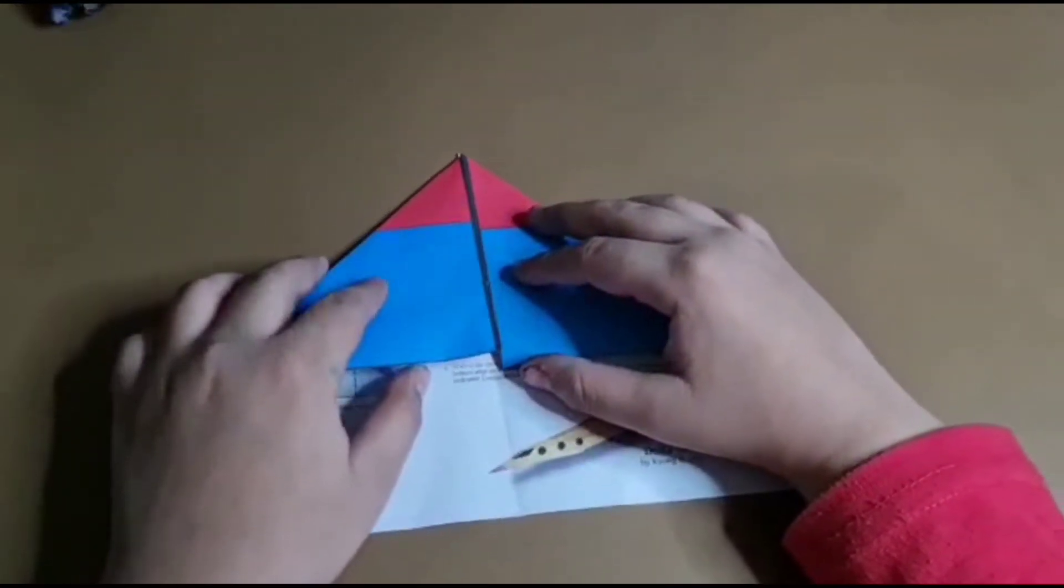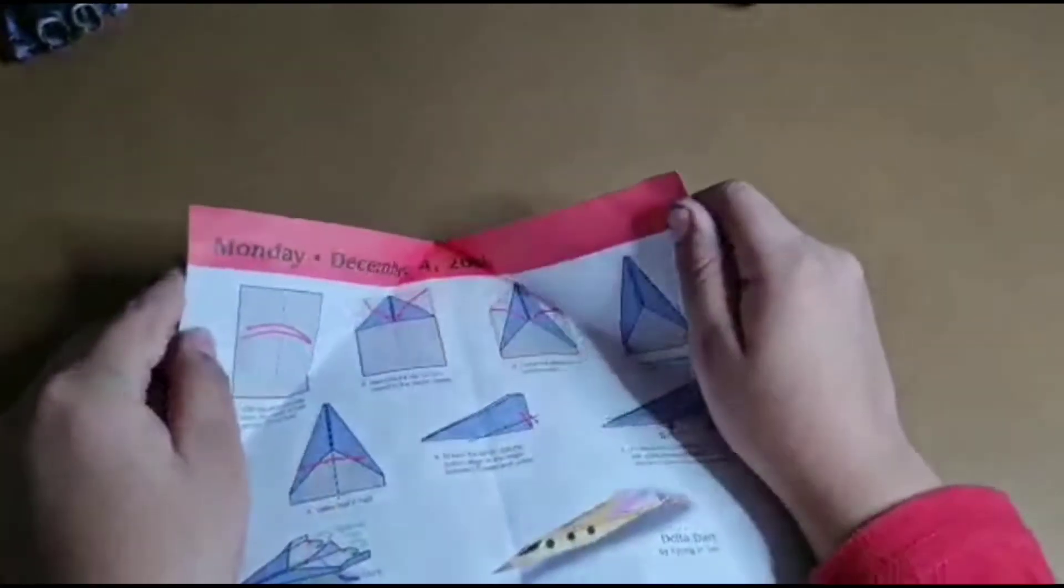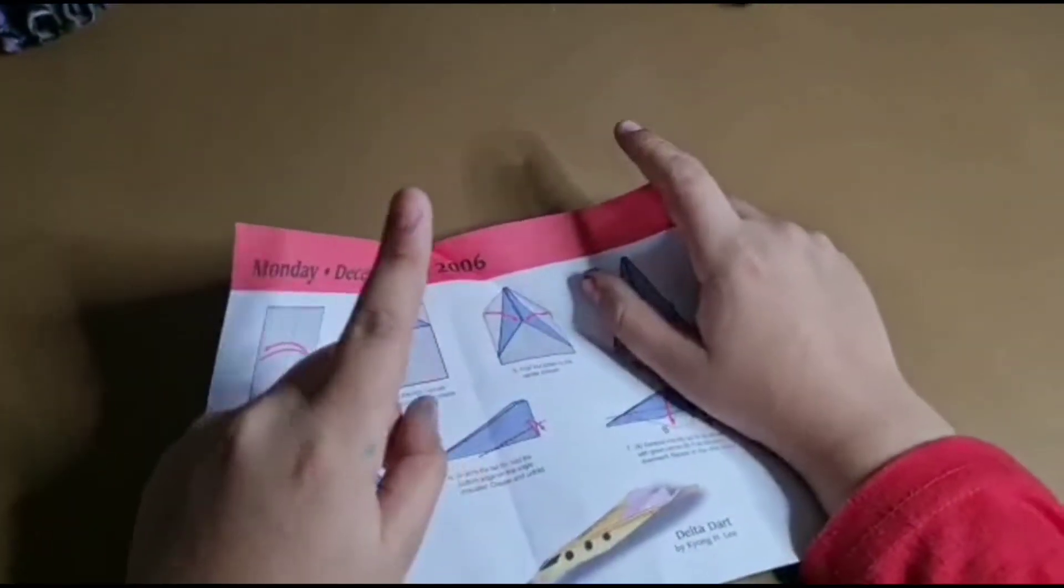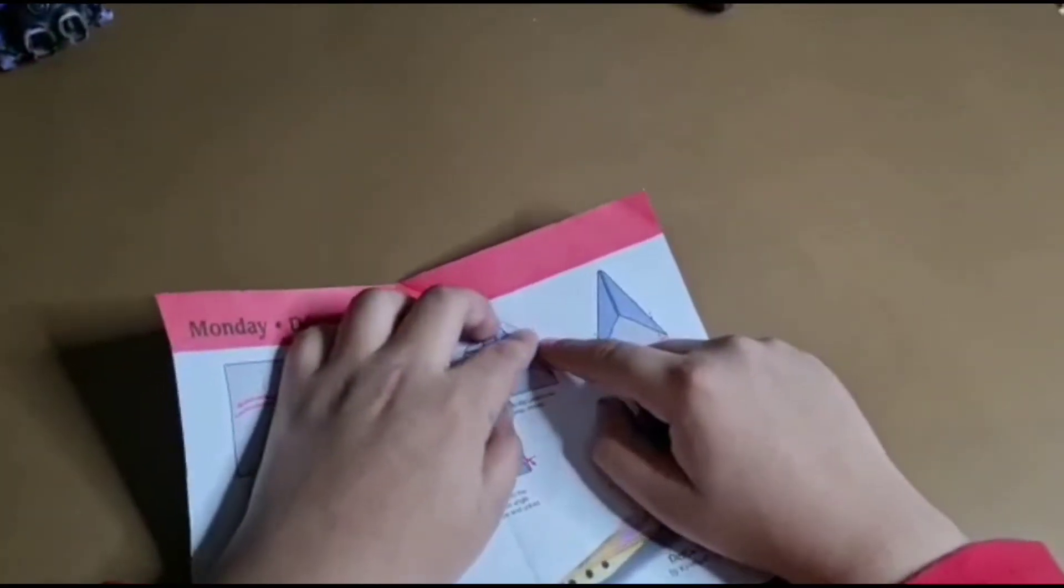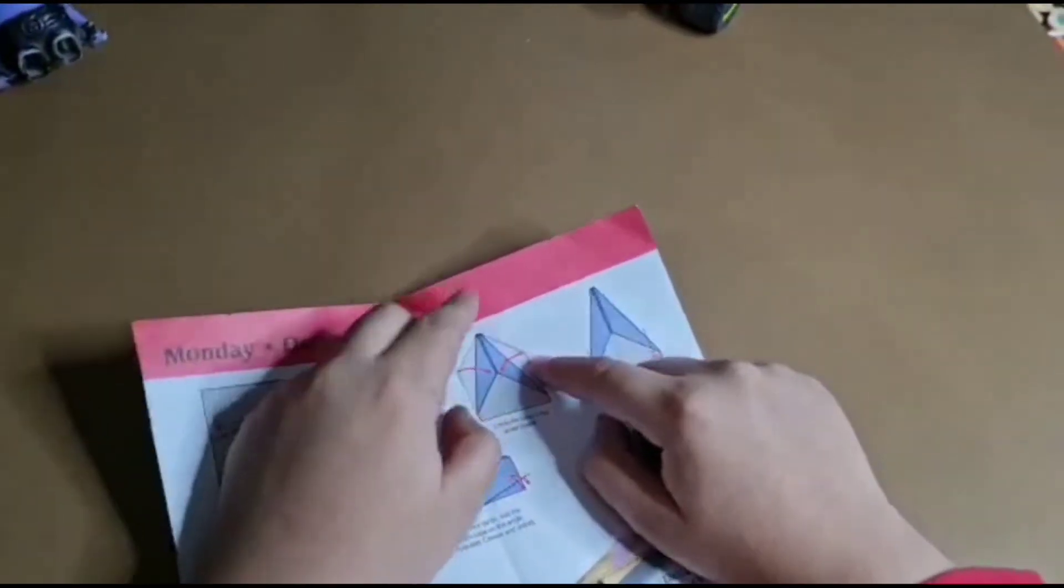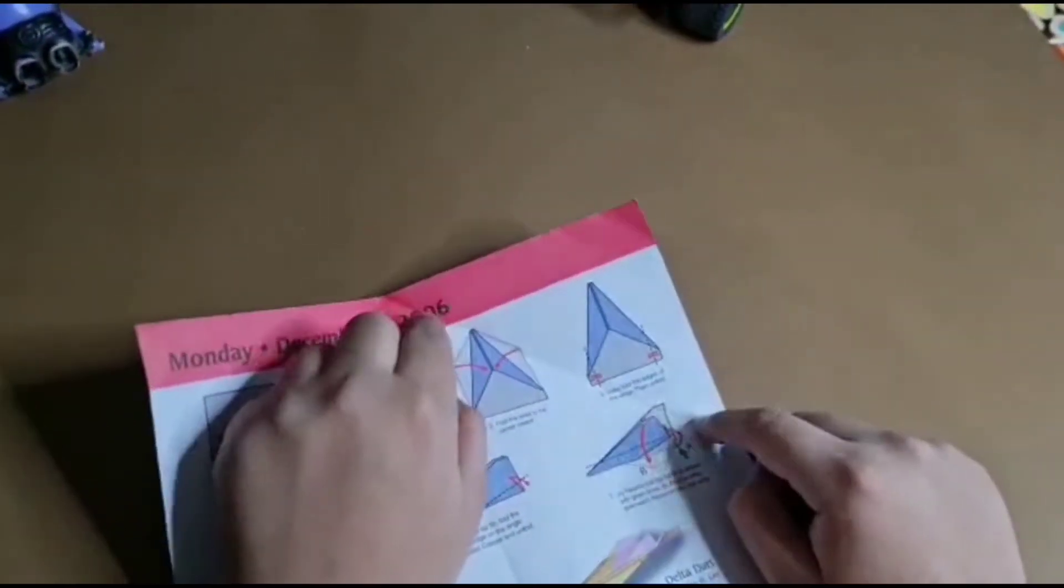This is the way we use to make planes. Now fold the outer edges to the creases made in step 1.